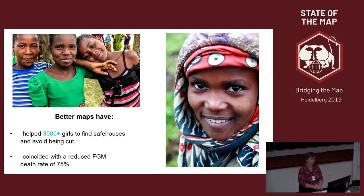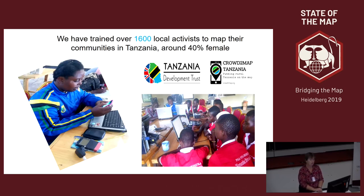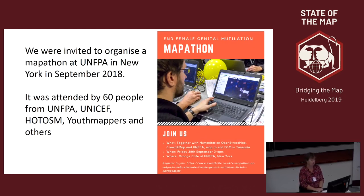Better maps have helped over 3,000 girls find safe houses and coincided with a reduced FGM death rate. Every year girls bleed to death and their bodies are thrown into the bushes, but having better maps is one way of helping protect them. We've trained over 1,600 local activists in many different areas of Tanzania, around 40% female. We've had support from Humanitarian OpenStreetMap as a micro-grant two years ago, and also from NetHope, which allowed us to get cheap smartphones — because generally in these communities people don't have access to smartphones, particularly women. Last year we were invited to organize a map-a-thon at the United Nations General Assembly by UNFPA, and we had satellite events in many countries.